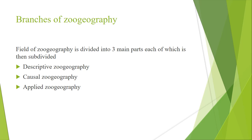Today we will study about the branches of zoogeography. There are three main branches, or divisions, of zoogeography. In some studies there are 10 branches, but due to similarities these branches are placed into three groups, where related or similar branches are kept in the same group.